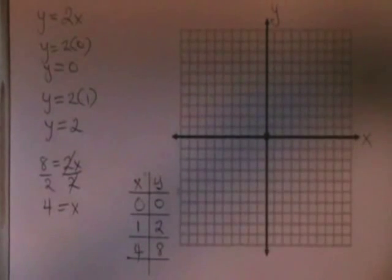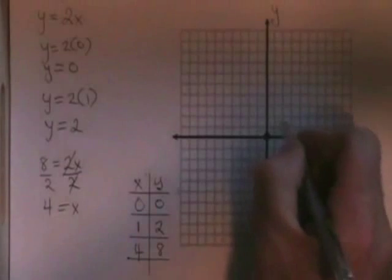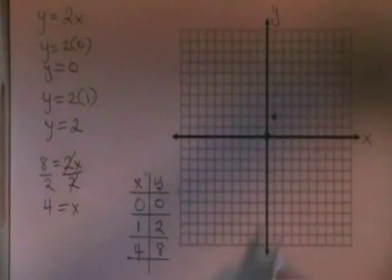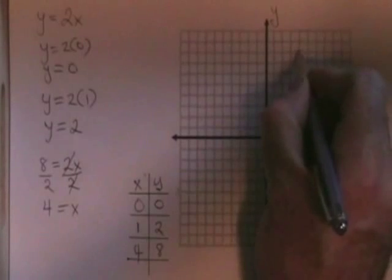0,0 is right here at the origin. 1,2 is here. And 4,8 is here.